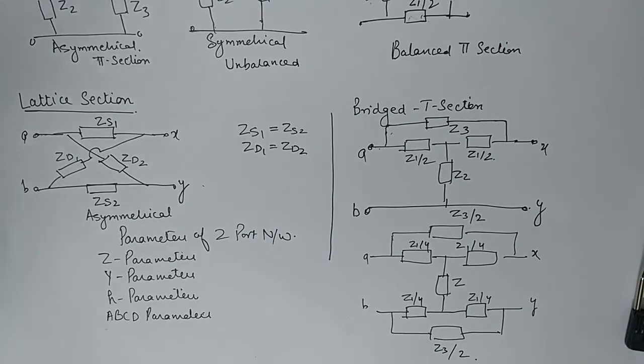Now these Z parameters are known as open circuit impedance parameters. Y parameters are popularly known as short circuit admittance parameters. H parameters are known as hybrid parameters.